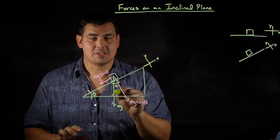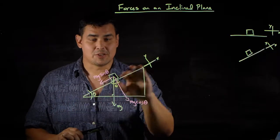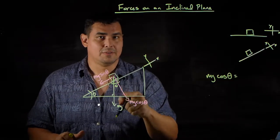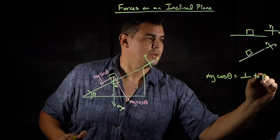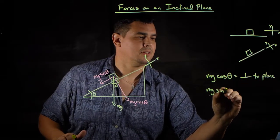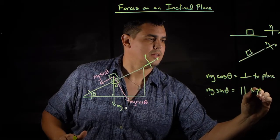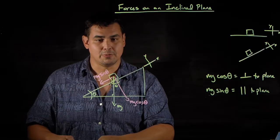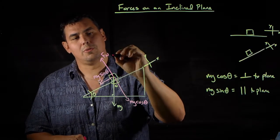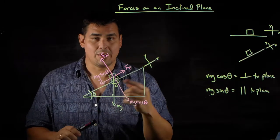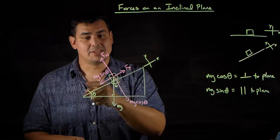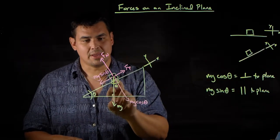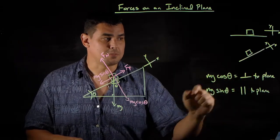So now gravity is broken into two components, and it's going to look like this for anything on an incline. mg cosine theta is always the component perpendicular to the plane, and mg sine theta is always the component parallel to the plane. A way to remember it: cosine is always opposite the normal force, and sine is the one pulling it down the ramp.